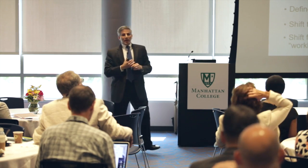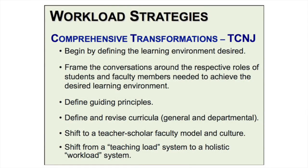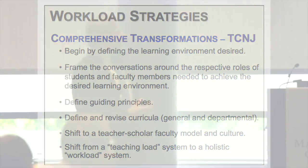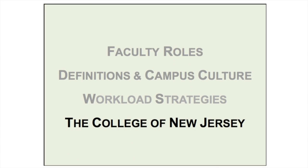Finally, what I call comprehensive transformation — this is the TCNJ example. We started with some of the other elements, but at a certain point it's really about driving toward the learning environment you want to create as an institution, having conversations about the role and expectations for students and faculty, defining guiding principles, examining the curricula, thinking about teacher-scholar culture, and then shifting from a traditional teaching-load system to a more comprehensive workload system. We called it an academic transformation. There were two pieces: transformation of the student work — the curriculum — and transformation of the faculty workload system.